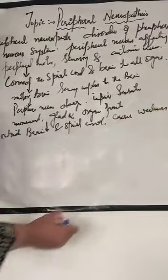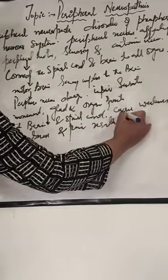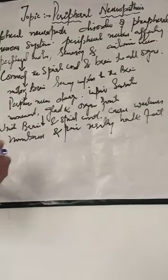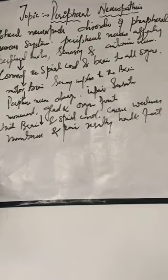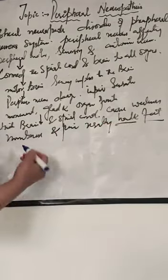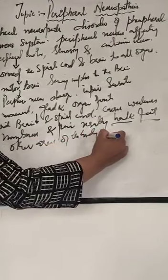Peripheral neuropathy refers to nerve damage outside the brain and spinal cord, which causes weakness, numbness, and pain, usually in the hands and feet. It can also affect other areas of the body, but mainly the nerves affecting sensation and movement in the hands and feet are involved.